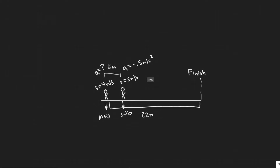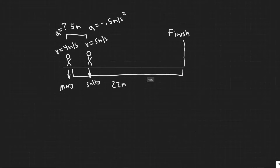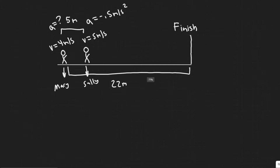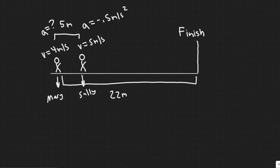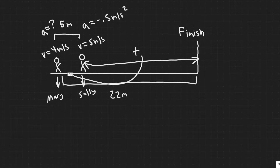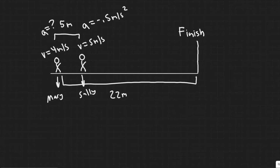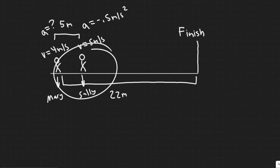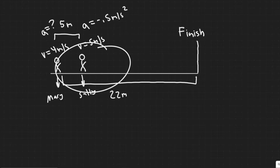We're going to use kinematics to solve this. First we need to solve for the time it's going to take Sally to finish the race. If we can get that time, we basically have the time required that Mary needs as well, because if it takes a different amount of time, they're not going to cross at the same time. So if we can find out what Sally's time to complete is, we can use that to solve for Mary's necessary acceleration.